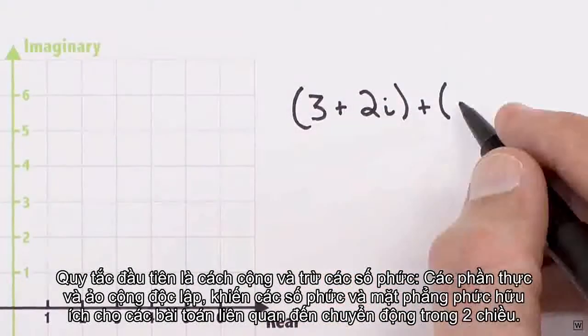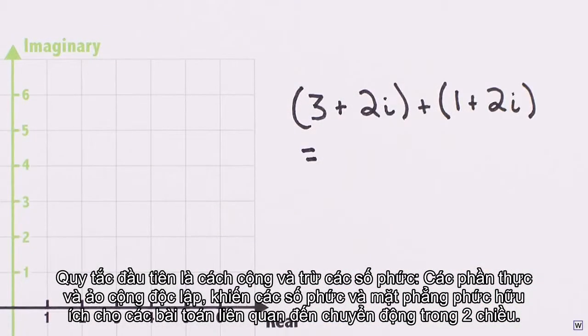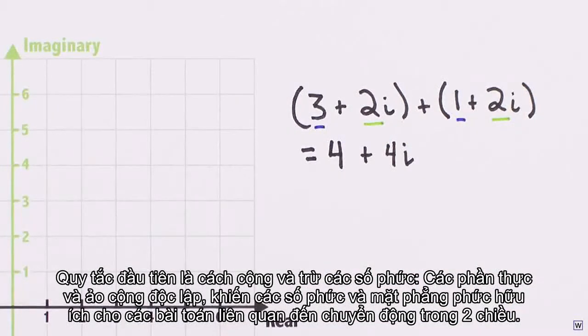The first rule is how complex numbers add and subtract. The real and imaginary parts add independently, making complex numbers and the complex plane useful for problems involving motion in two dimensions.